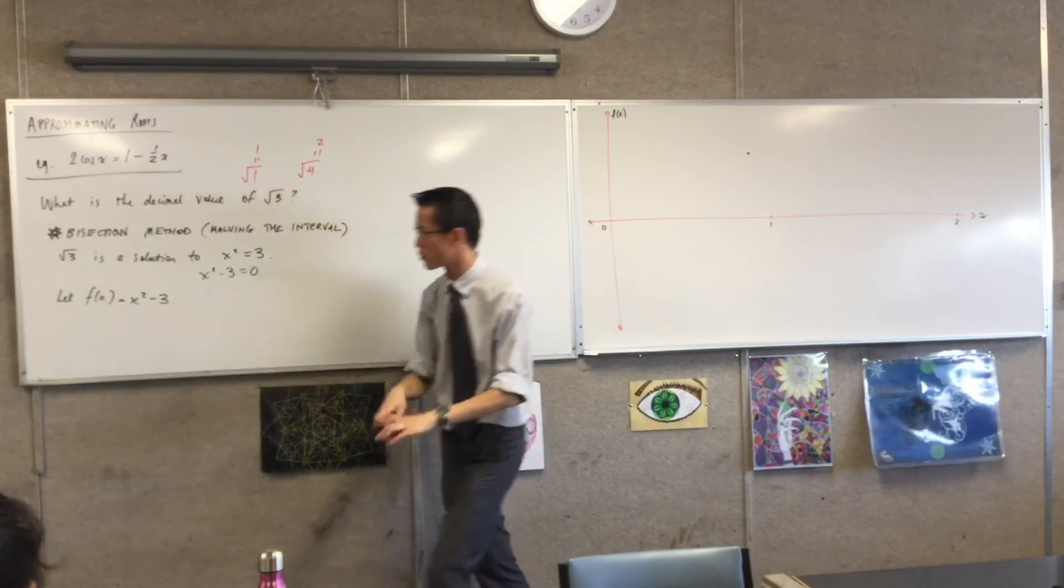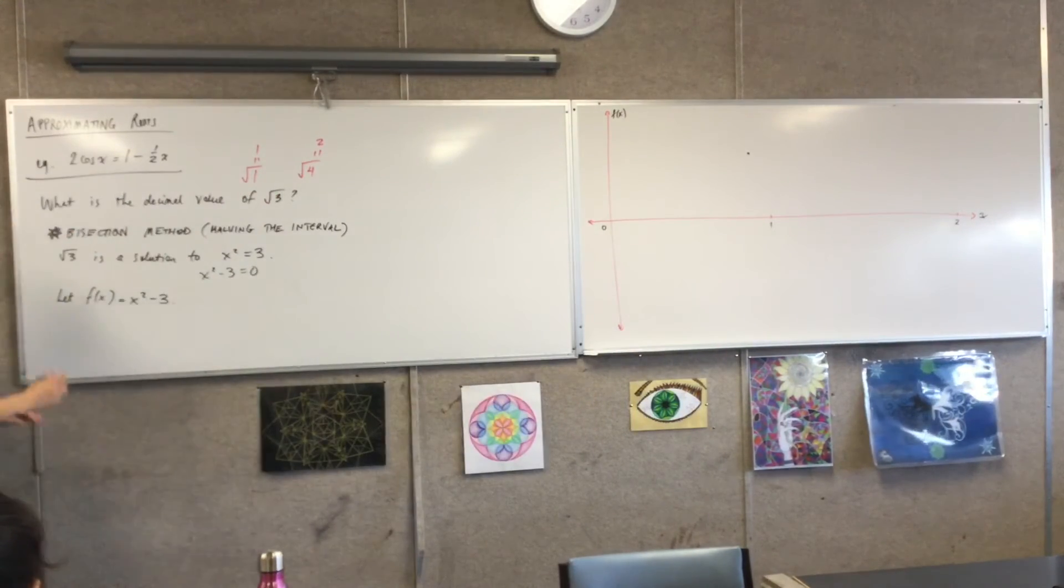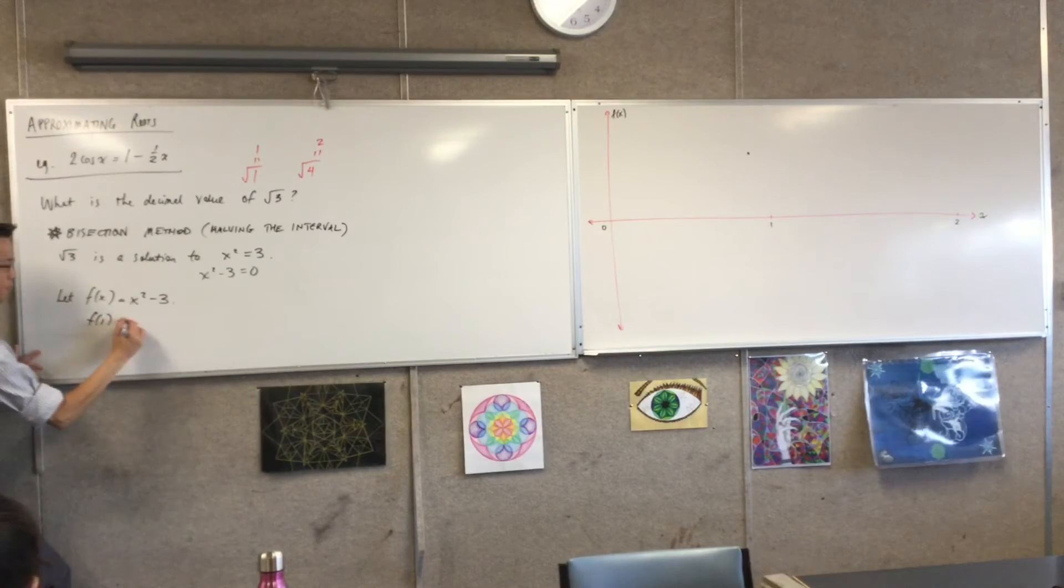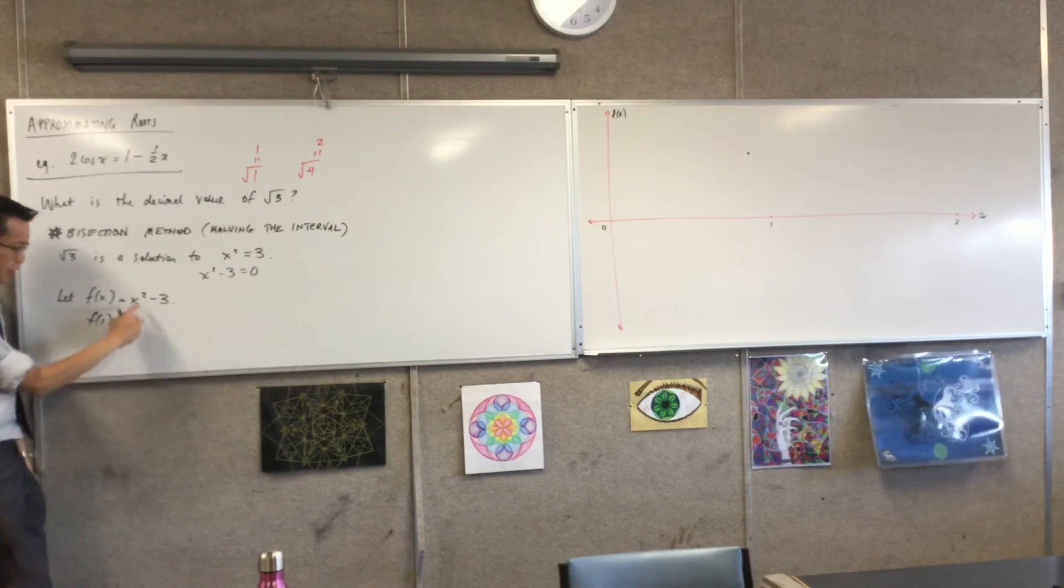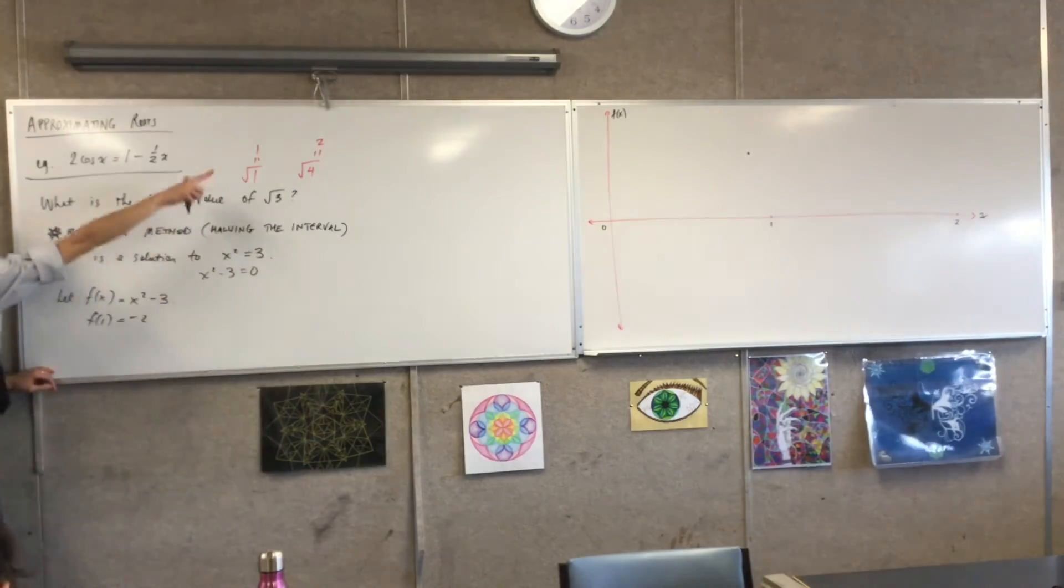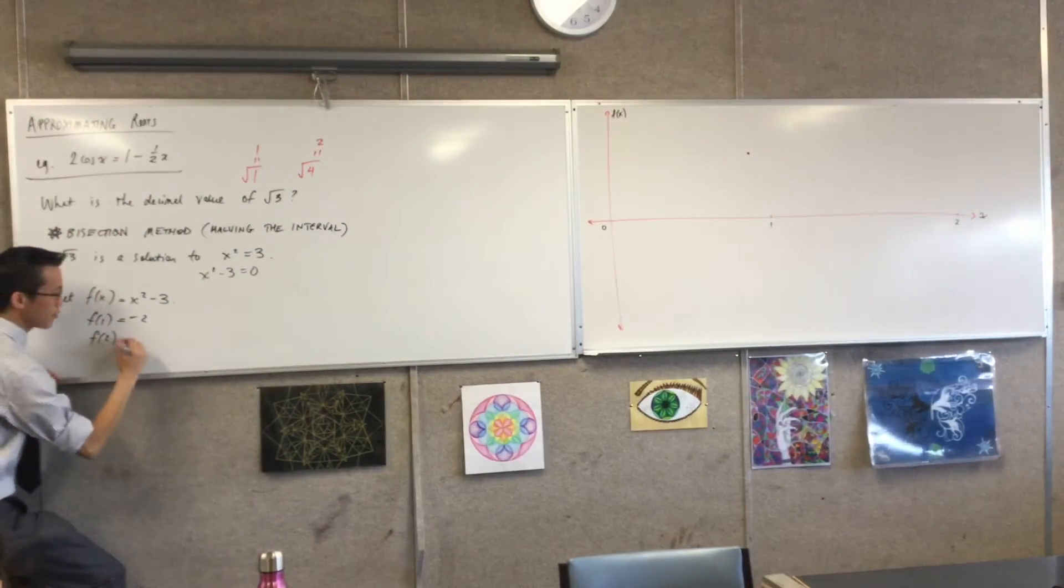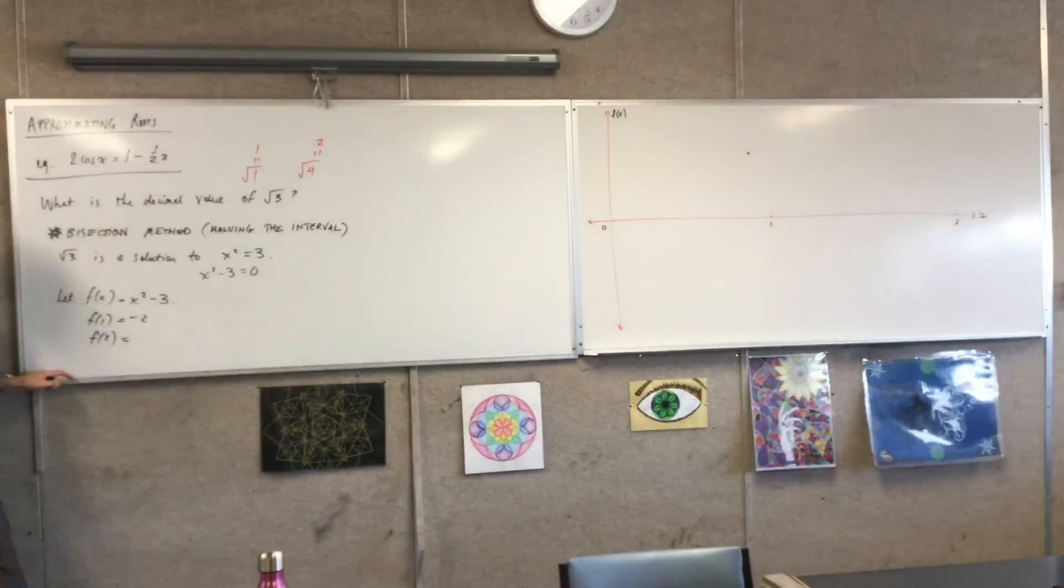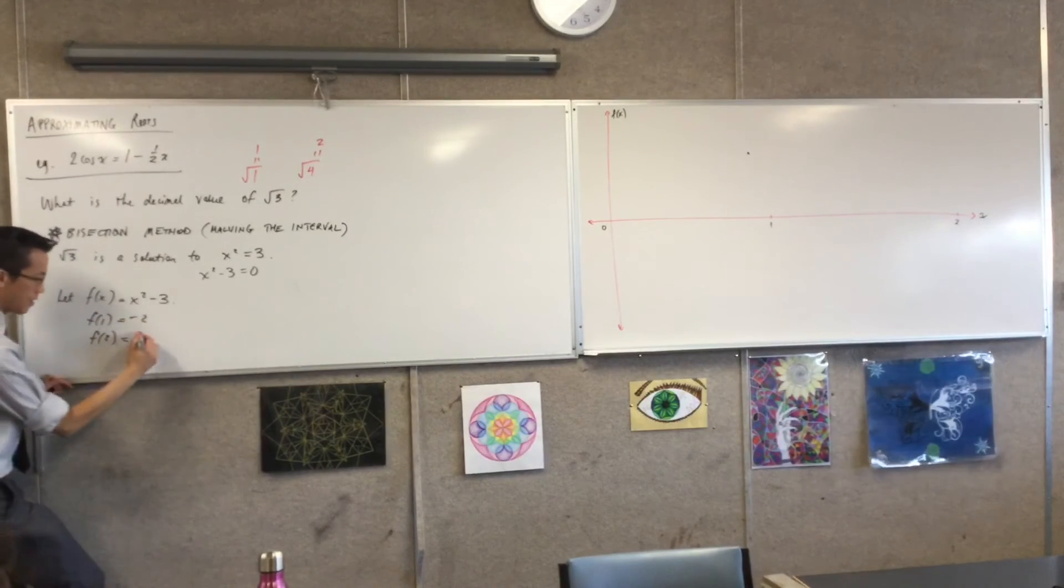Let me show you how it works with these guys, right? If I've got, this is f of x, what's f of 1? Minus 2. It's 1 minus 3, negative 2, okay? What about f of 2? What value am I going to get there? 1, right? 4 take away 3, that's 1.